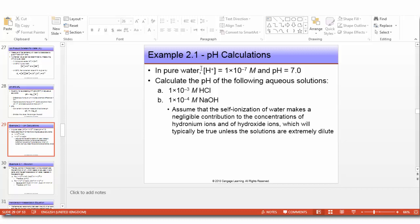Let's look at example 2.1: pH calculations. In pure water, if H+ equals 1 times 10 to the minus 7 molar and pH equals 7, calculate the pH of the following aqueous solutions: 1 times 10 to the minus 3 molar HCl, and 1 times 10 to the minus 4 M NaOH. Assume that the self-ionization of water makes a negligible contribution to the concentration of hydronium ions, which will typically be true unless the solutions are extremely dilute. We neglect the water dissociation contribution unless we have extremely dilute solutions.